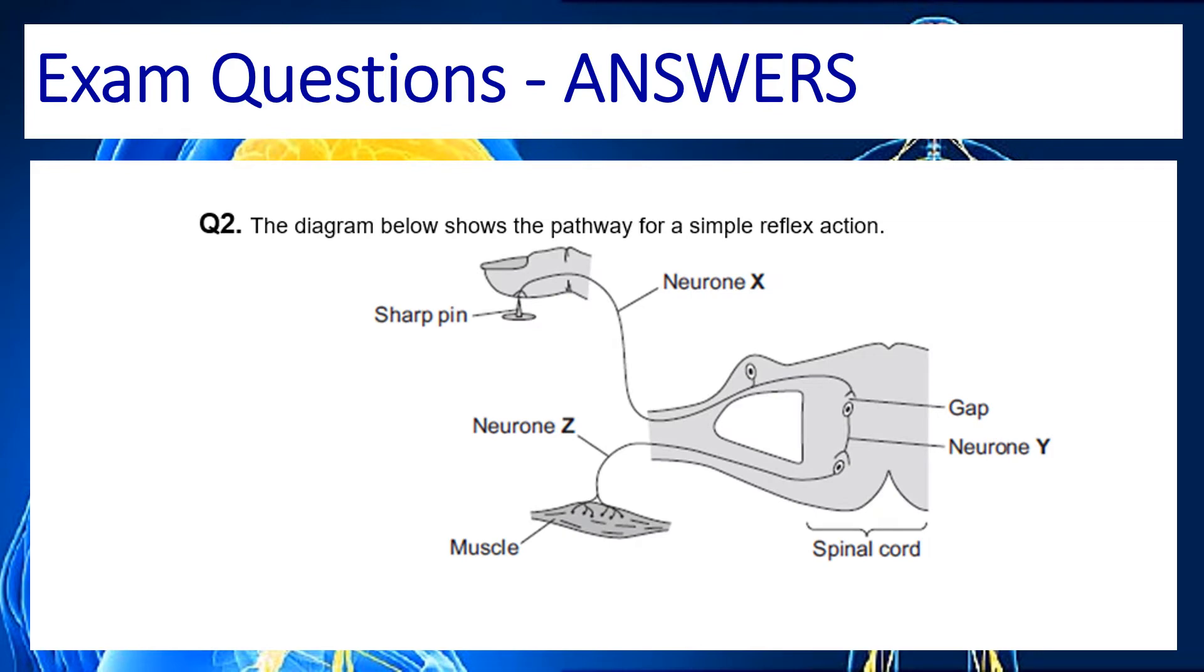This is a diagram you'll see in a lot of exam questions and although it looks quite complicated really there's not too much to look at here. So we see over here the sharp pin. This is our stimulus that we feel with the finger. We then know that the signal is going to travel along this sensory neuron, until it gets to a relay neuron here and then finally as it leaves the spinal cord will go along a motor neuron to the muscle. So we'll see a lot of these. Let's have a look at the question now.